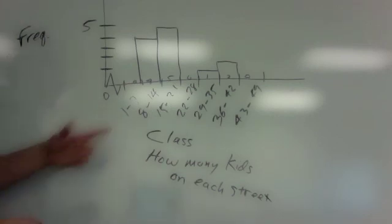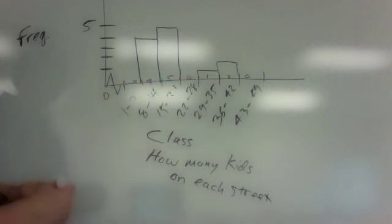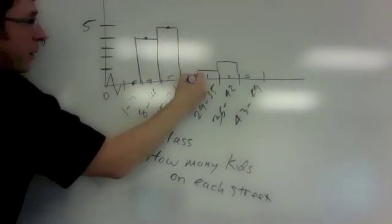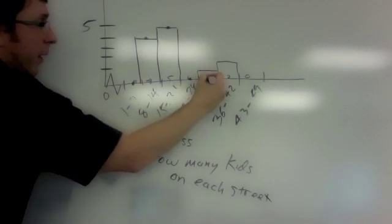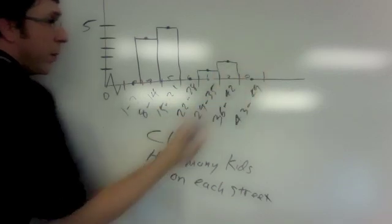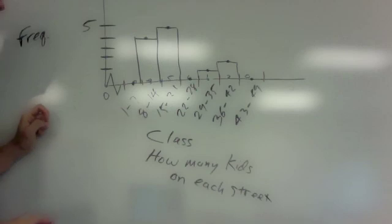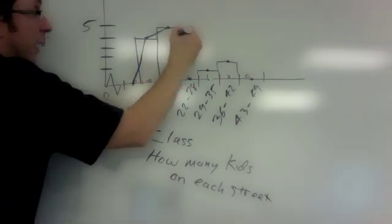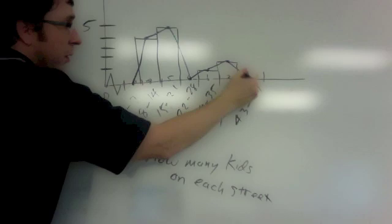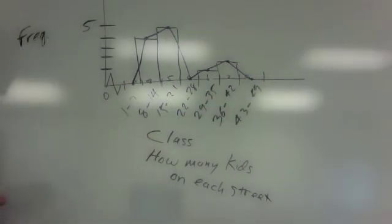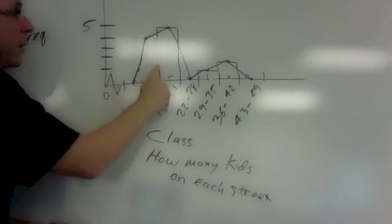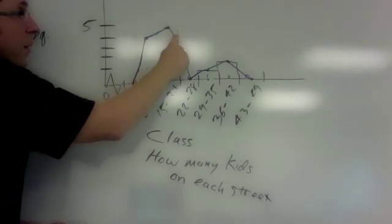The frequency polygon connects the midpoints of each of these intervals. We have the midpoints calculated, but we don't actually need to locate them on the scale. We can just put a midpoint under each of these bars. Where the bar is zero, the midpoint would go right on the x-axis, and then we can connect with straight lines. That gives you an impression of the general distribution in terms of how the streets populate kids. Technically, for the frequency polygon, these bars would then disappear. That's how you turn a frequency histogram into a frequency polygon.